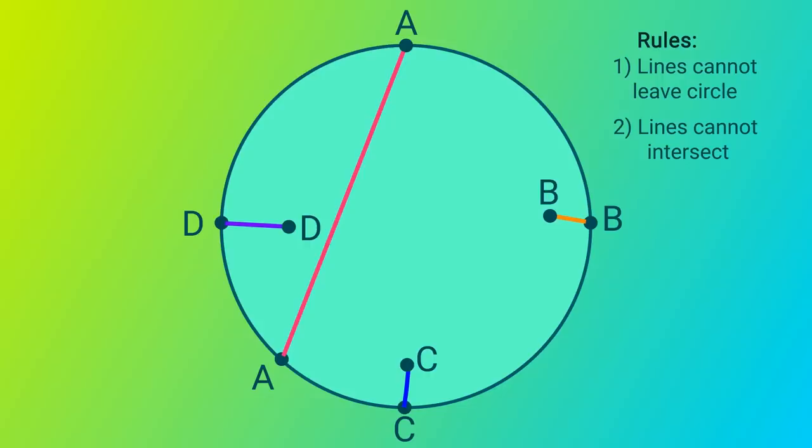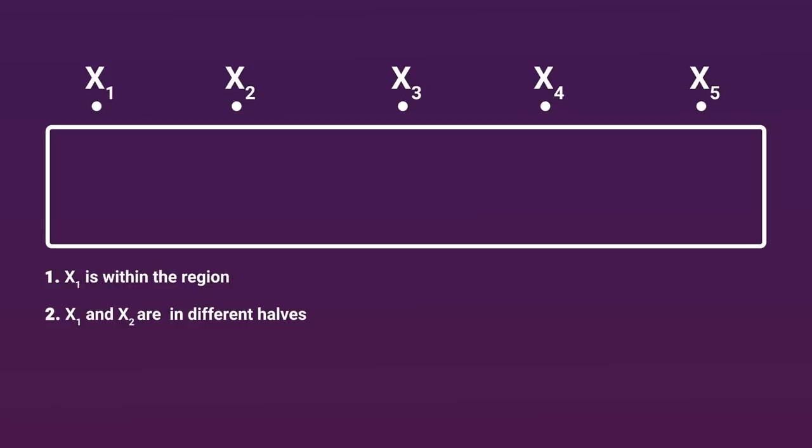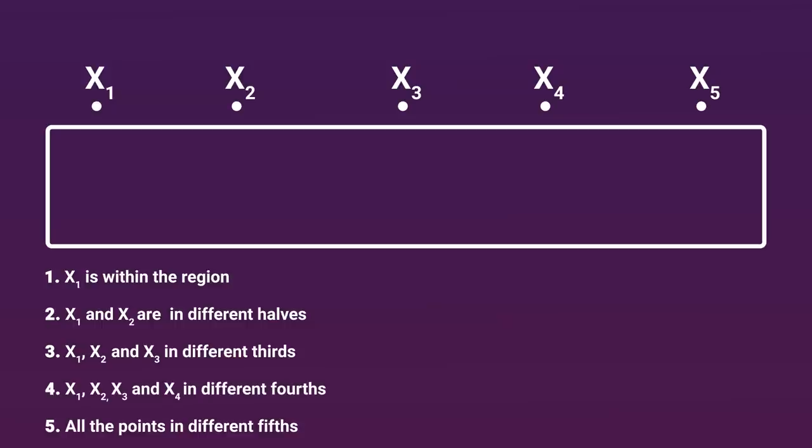Now this next puzzle is a seemingly simple one that has to do with a rectangular region, but we can really think of it as a one-dimensional line segment as well. The question is, can you place five points, we'll label x1 through x5, such that x1 is within that region, so that's easy, then x1 and x2 must be in different halves, x1, x2, and x3 have to be in different thirds, x1 through x4 must be in different fourths, and all the points must be in different fifths of that region. Okay, at first I thought this was going to be super easy, but it's not. Here, let's just build up to it.